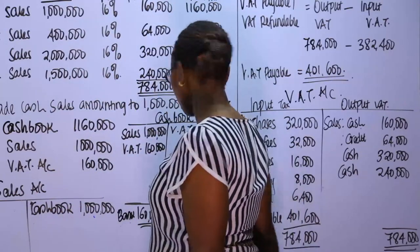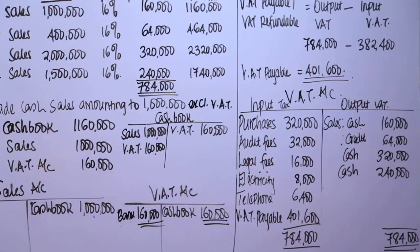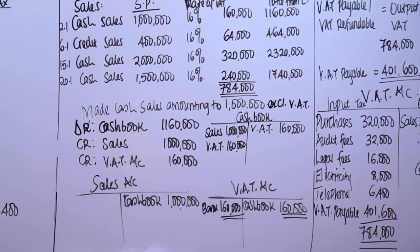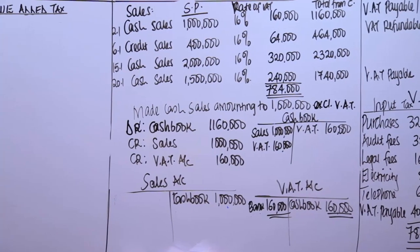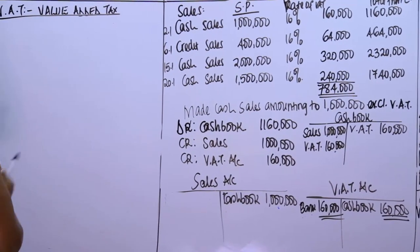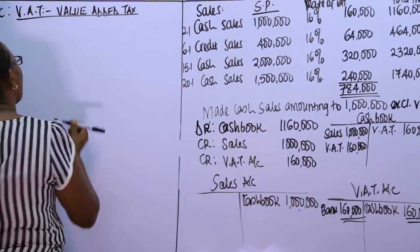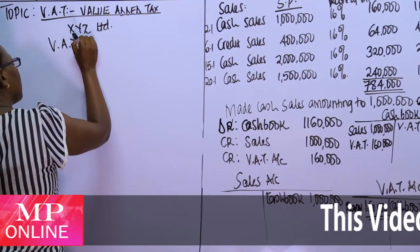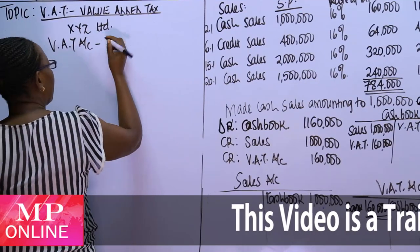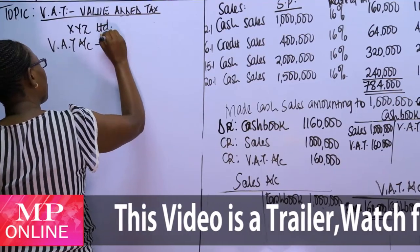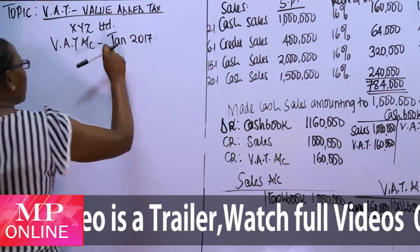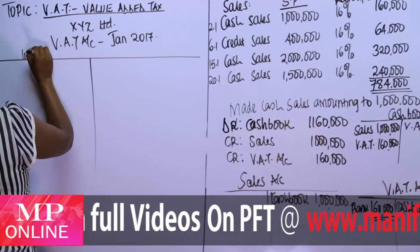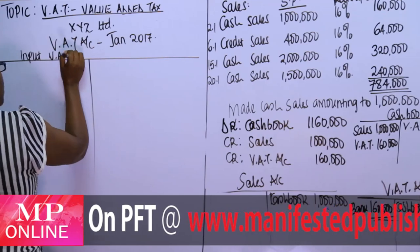We are now going to look at other aspects of the VAT account more comprehensively, starting with drawing the account format. The account must be for our business — let's say XYZ Limited — preparing the VAT account. The tax period is monthly, January 2017. The account has two sides: input VAT and output tax.